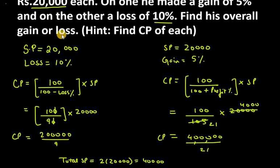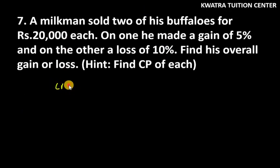Now we will take the cost price. So cost price, what will happen? First of all, the cost price was 2,00,000 over 9 plus 4,00,000 over 21. So now we will solve it.